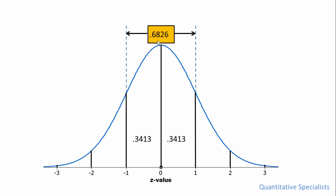In other words, 68.26% of the values in this entire distribution fall within a z of negative one to positive one. So 68% of the values are in this area here.